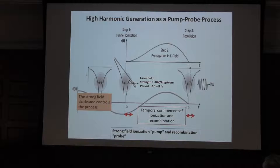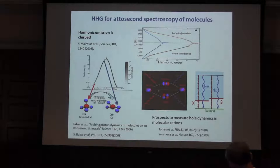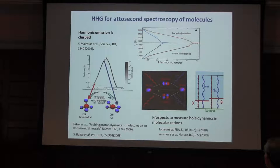Basically, we use the fact that the returning electron is chirped. Initially, it comes back with a blue chirp, and then it comes back with a red chirp, so it's short and then long trajectories, which was measured by Yammeres and others back in 2003. We used this property to look at the structural rearrangement of cations, for instance, methane cation, following sudden ionization.